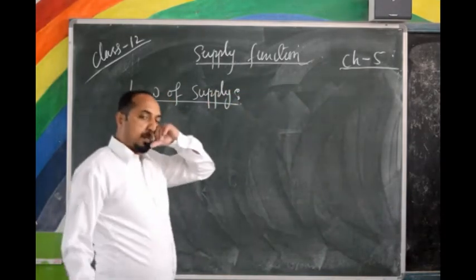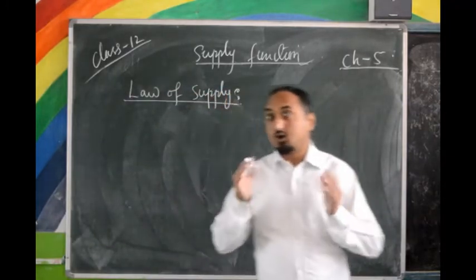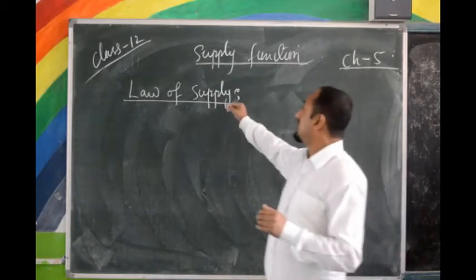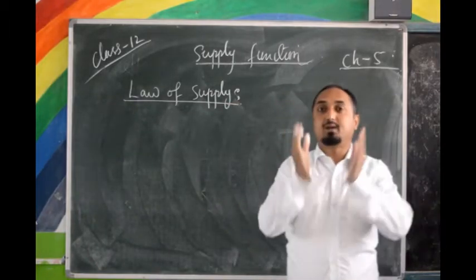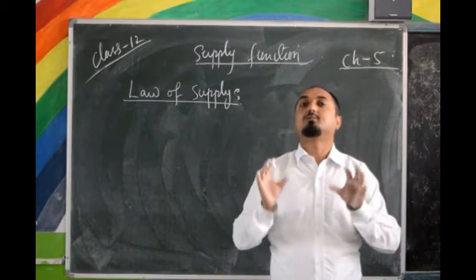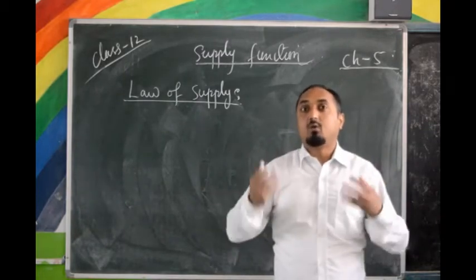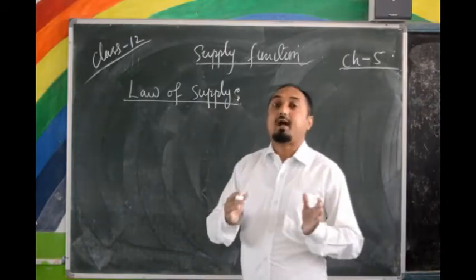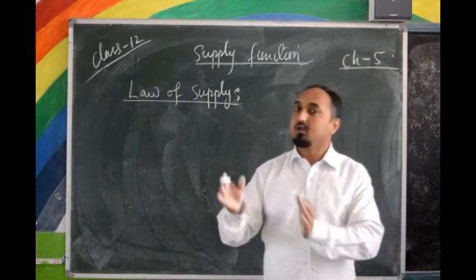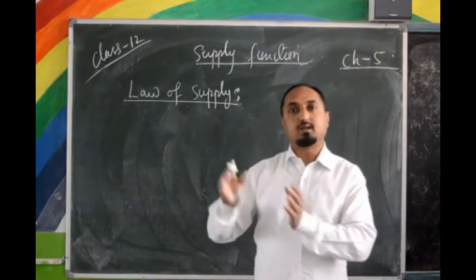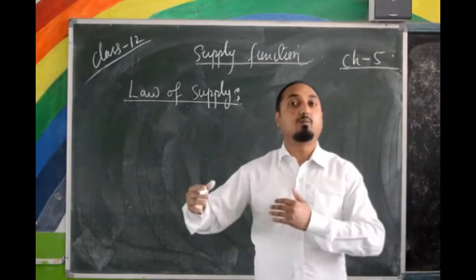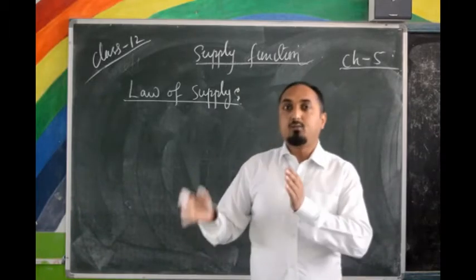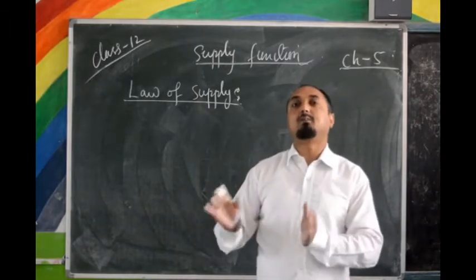Now let us move to the Law of Supply. In chapter number two, we already did the Law of Demand, and after explaining the Law of Supply, I will make a comparison between the two. The Law of Supply says: all other things remaining constant, when the price of a commodity increases, the quantity supplied will also increase. And when price decreases, quantity supplied will decrease.